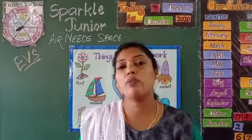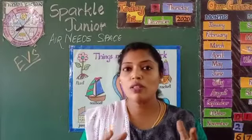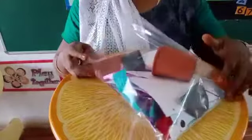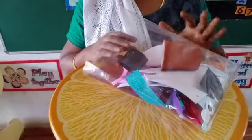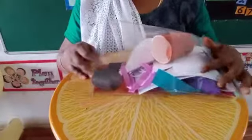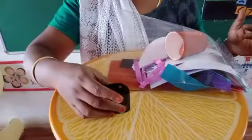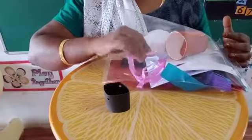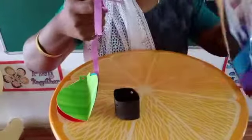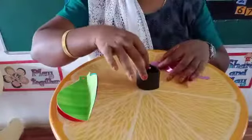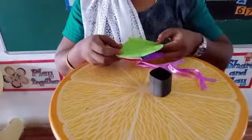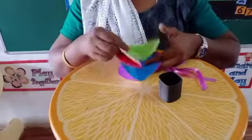So, today we have learnt air needs space and things need air to work. Based on that, today we are going to make a takeaway — a paper craft of a hot air balloon. For that, take out your takeaway cover and from that you need a black color chart roll, some colored papers cut into this balloon shape, a black color cylindrical shape piece, and a black color circular paper, along with balloon-shaped cutouts.